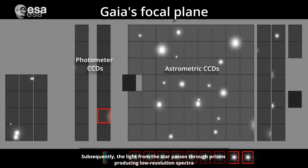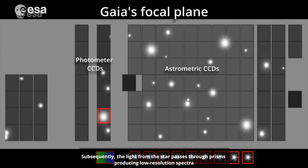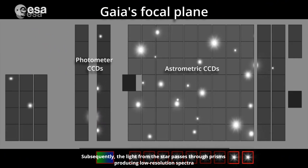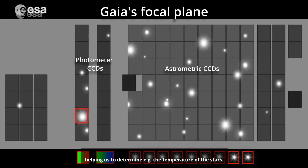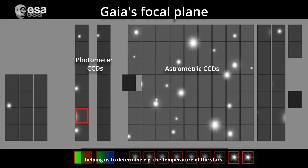Subsequently, the light from the star passes through prisms, producing low-resolution spectra, helping us to determine, for example, the temperature of the stars.